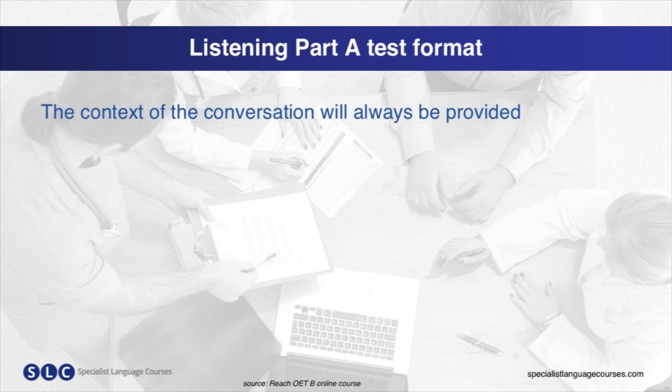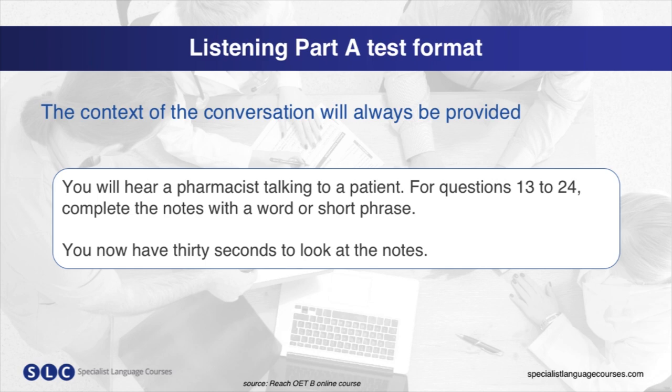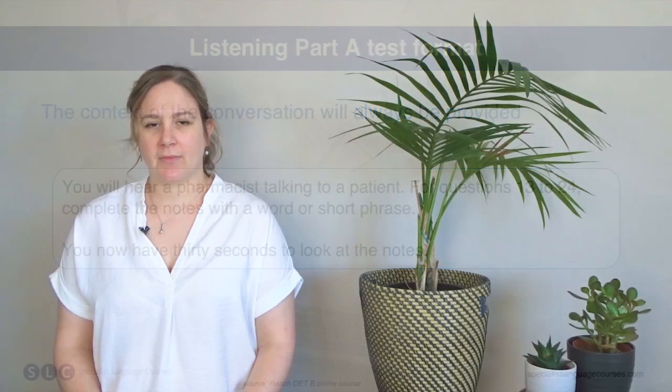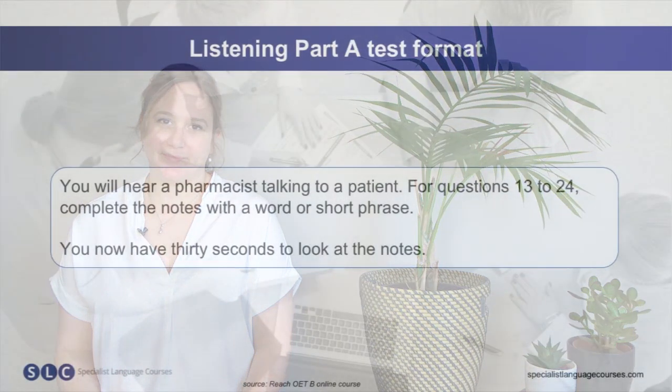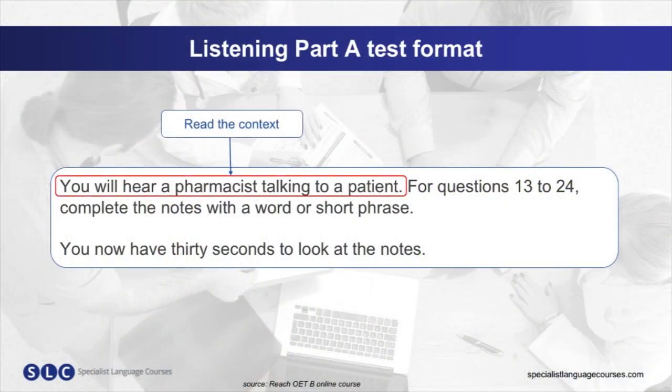The context of the conversation will always be provided — you can see an example here. First, read the context given, as this will help you predict the content of the conversation. So in this example, you will hear a pharmacist talking to a patient. You can predict that the conversation may contain information about medications, a medical condition, or perhaps advice.